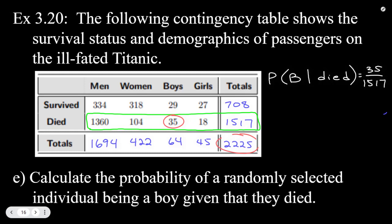So again, the given part means the condition is we're only considering people in that group, people who died. So 35 divided by 1517, and we're going to get that that is equal to 0.023 for our probability there.